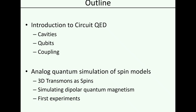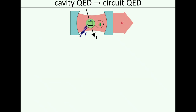That brings me to how we want to combine these systems to essentially build up something with which we can perform an analog simulation of dipolar quantum magnetism on lattices in the long run, and then at the end I want to show you some first experiments towards that direction. I guess most of you are familiar with cavity QED, and the idea in circuit QED is we essentially take the optical resonator and replace it with a microwave resonator, so we use microwave photons instead of optical photons.